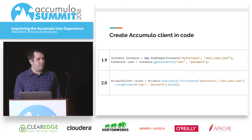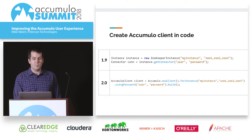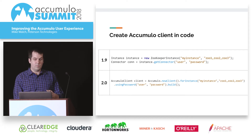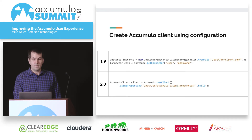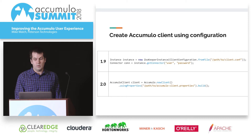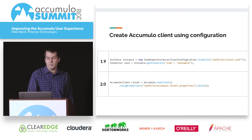Here's an example of creating an Accumulo client in code — the top is 1.9, the bottom is 2.0. And here's one using configuration.